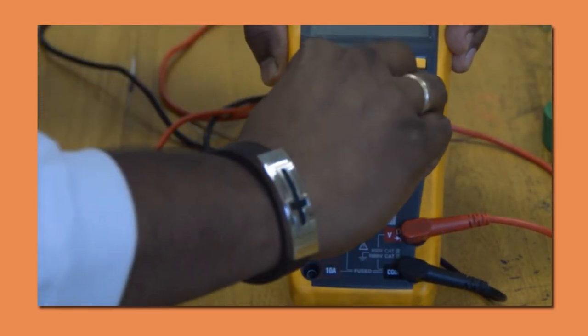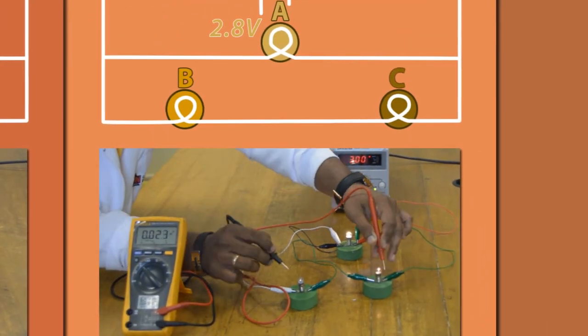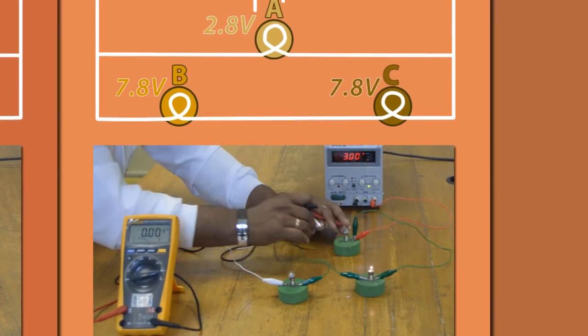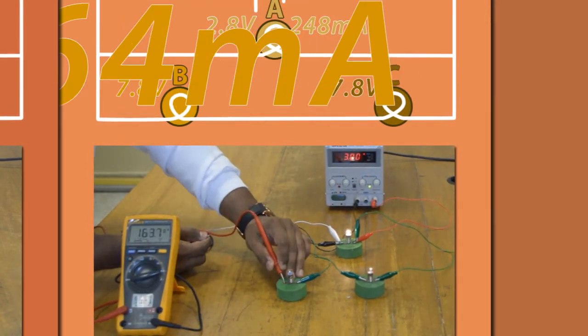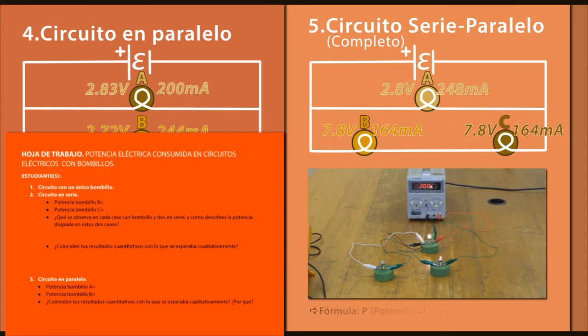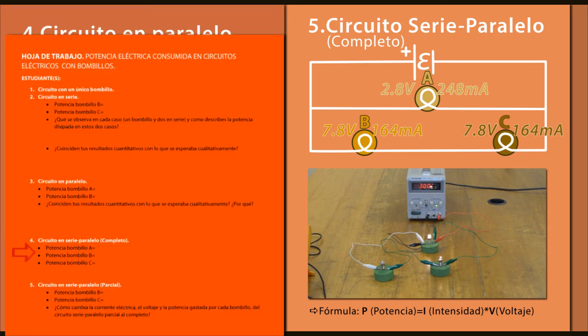Se mide con el multímetro la corriente eléctrica y la diferencia de potencia para cada bombillo. Calcule la potencia disipada para cada caso y compárela con las intensidades luminosas.